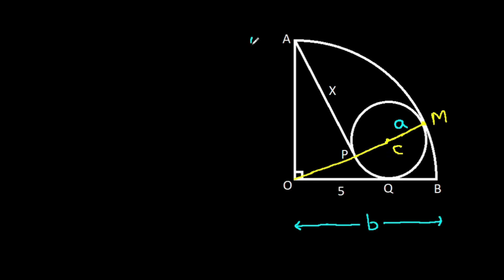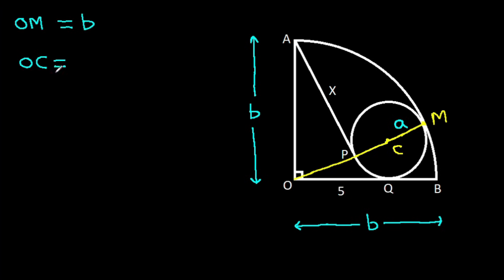AO will be B and OM will be B. So OC will be OM minus CM, and that is B minus A. So OC equals B minus A.